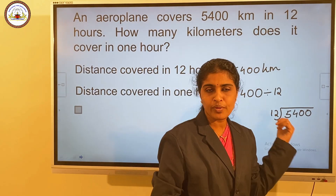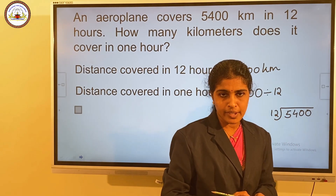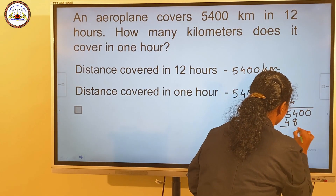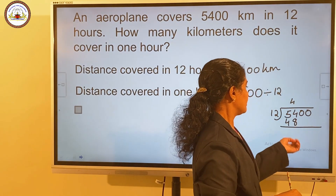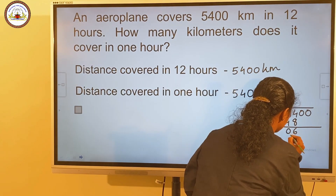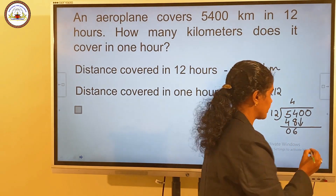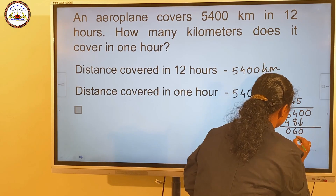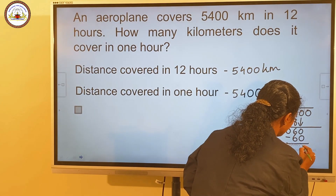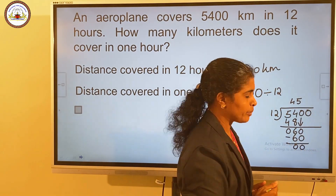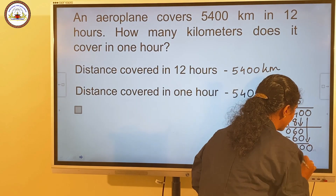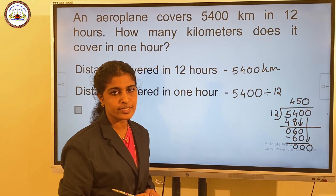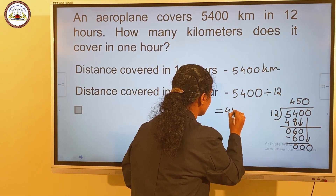We divide 5,400 by 12. Since 5 is less than 12, we divide 54 by 12. In 54, 12 goes 4 times — 48. Then 54 minus 48 is 6. Bring down the next number, 0. In 60, 12 goes 5 times. And when subtracting, we get 0. One more 0 is remaining, and on that 0 it is not possible to divide, so we put 0 in the quotient. So our answer is 450 kilometers.